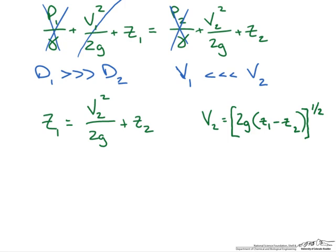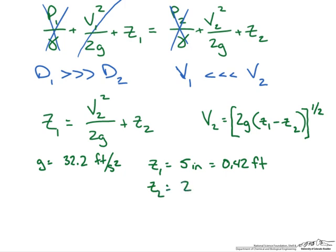At this point we can start plugging in some numbers. For g we are going to use thirty two point two feet per second squared. For z one we are going to use five inches which is also equivalent to point four two feet. And for z two we will use two feet. If we plug these numbers into that equation we should get a velocity at point two equal to ten point one feet per second.